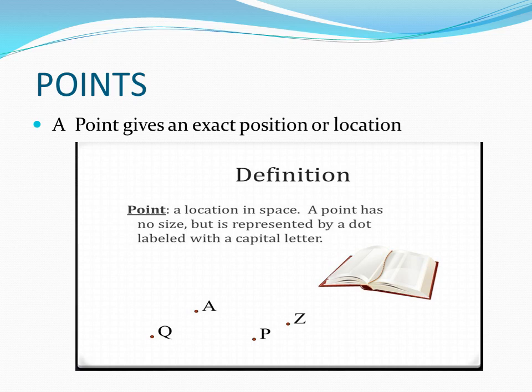Points. What does a point mean? A dot that we place on a paper is nothing but a point. If I make it too small, I can't identify it, so I make it bigger. This point gives an exact position or location. A point has no size, but it can be represented as a dot.